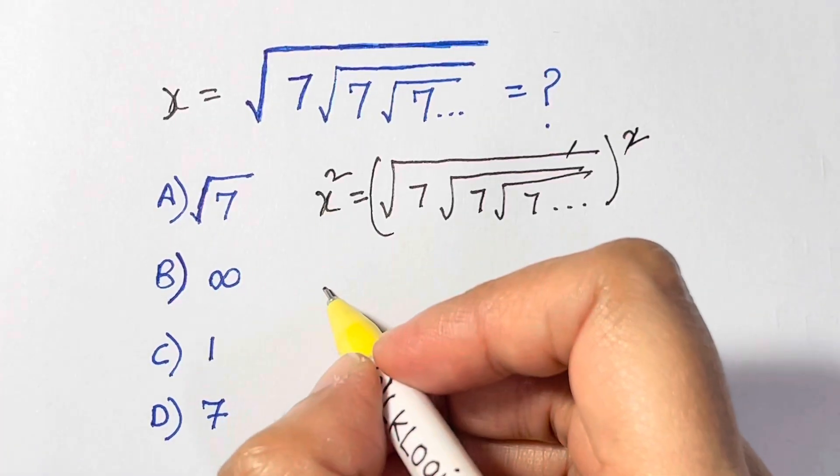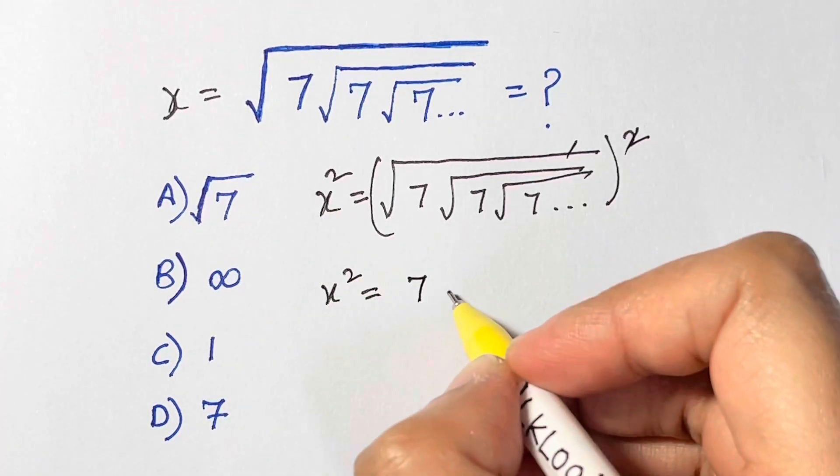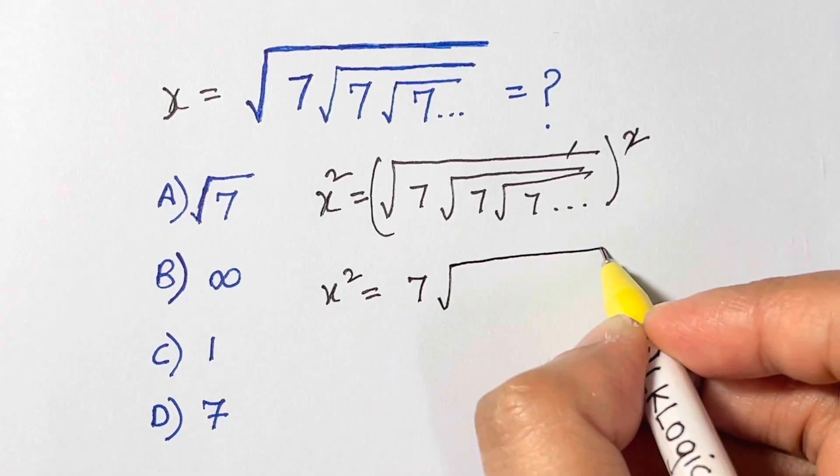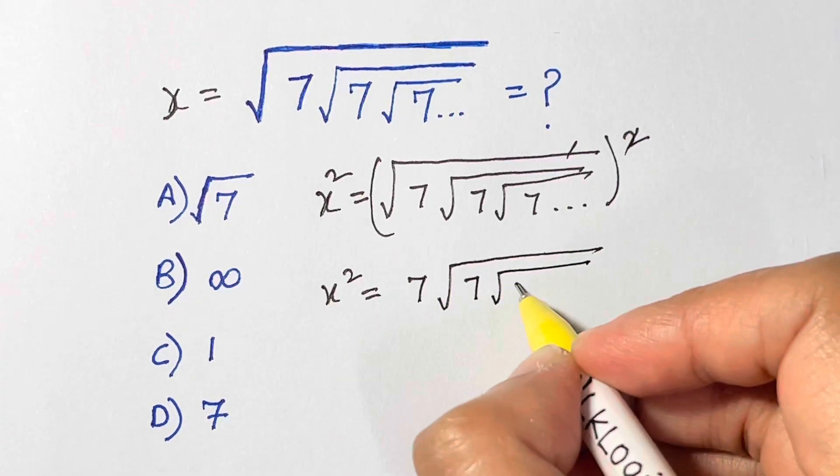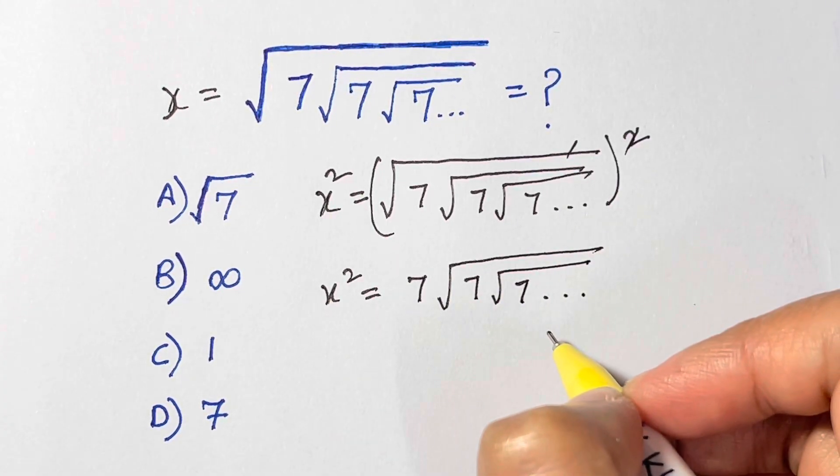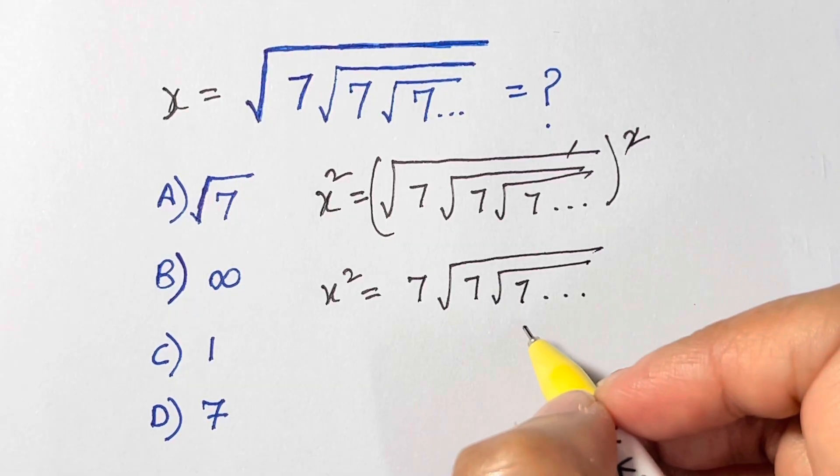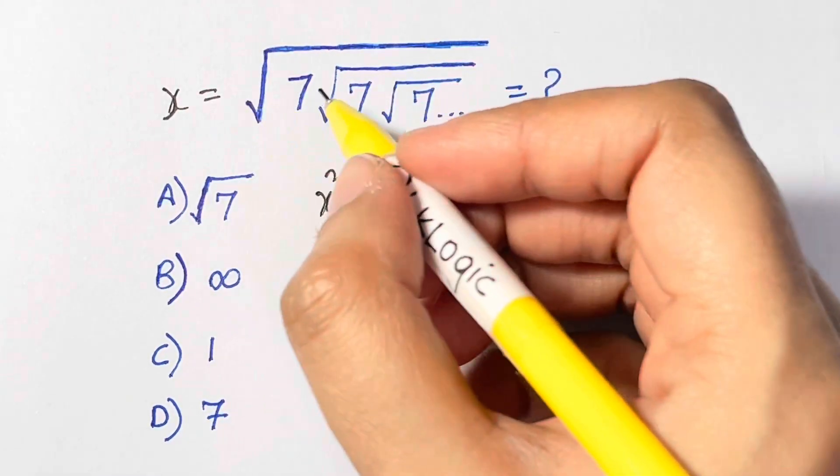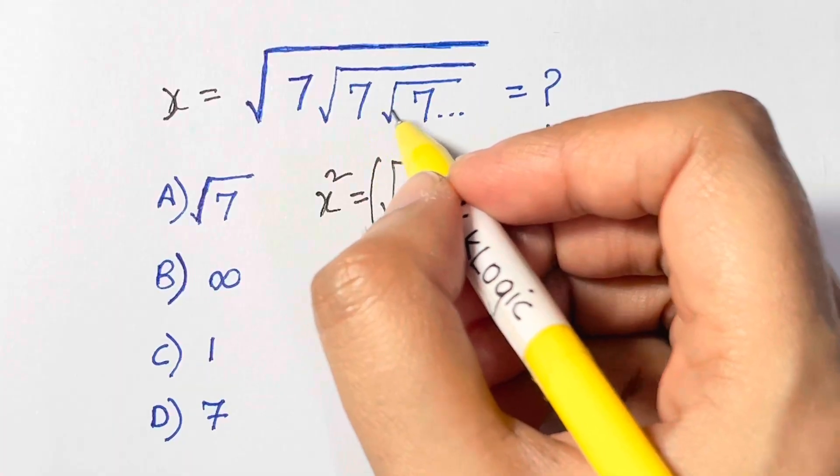So we are left with x square is equal to 7 times under root of 7, root of 7, times infinity and so on. Now as you can see from the question, under root of 7, under root of 7, and root 7 times infinity which goes on is equal to x.